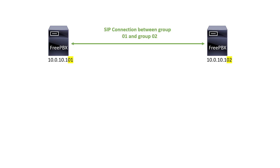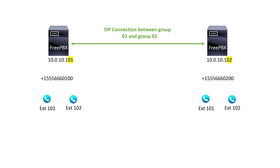In this video things are going to get more complex. We're going to set up a SIP connection between two different groups by setting up a SIP trunk. Later on we'll create mainline numbers for both groups and place a test call showing that when you call those mainline numbers from either side it's going to ring both phones.